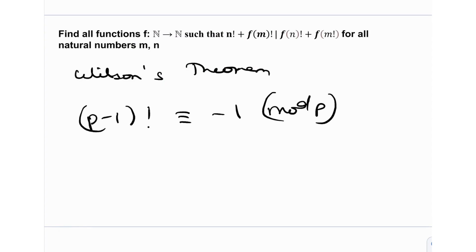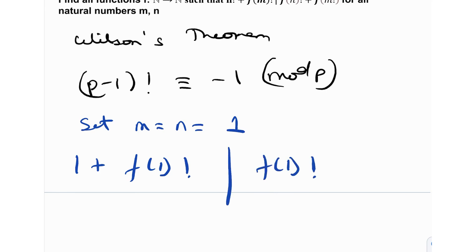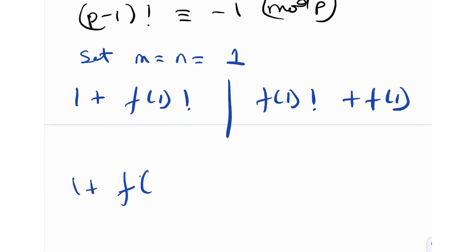Let's start with our problem. I'm going to first use the substitution m = n = 1. When I do that, I'll get (1 + f(1))! dividing f(1)! + f(1). But we also know that (1 + f(1))! divides itself — a number divides itself. For example, 7 divides 7, 100 divides 100; any number k divides itself.